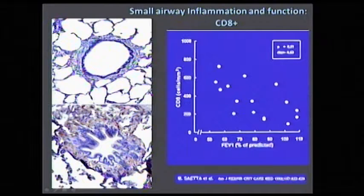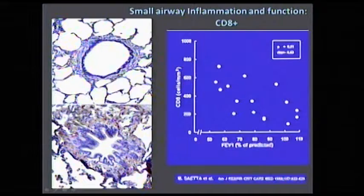This converts the initial innate inflammation into adaptive inflammation, in which T cells are abundantly seen in airways — as Marina had demonstrated some years ago. You can see them in red here. This is a normal small airway and this is abnormal. She also showed that the FEV1 drop is related to the increase in these inflammatory cells.